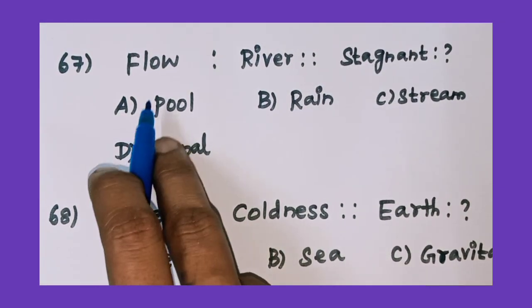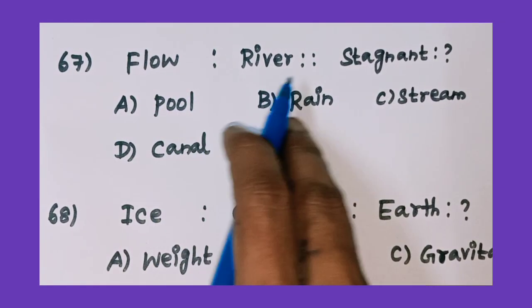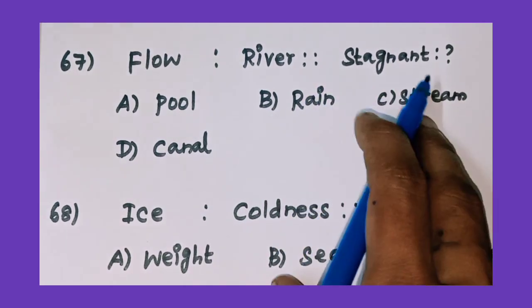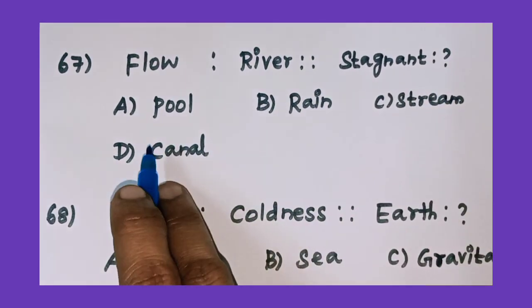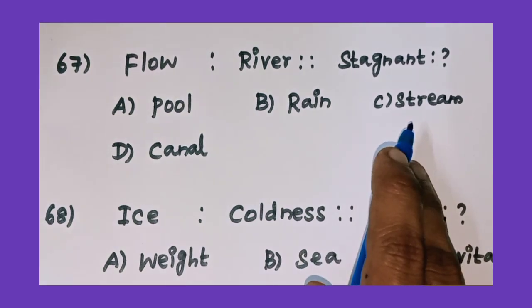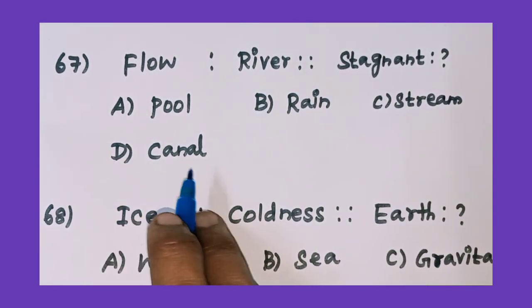67th question: flow is to river as stagnant is to what? Option A: pool, option B: rain, option C: stream, and option D: canal.